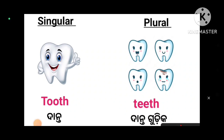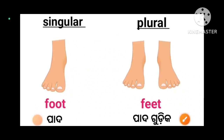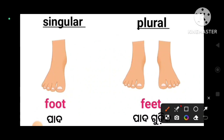Next: tooth. Tooth means one tooth (dant). The plural form of tooth is teeth — T-E-E-T-H. You cannot say 'tooths'; the correct plural is teeth, meaning more than one tooth. Next: foot. Foot means one foot (pad). The plural form of foot is feet — F-E-E-T.